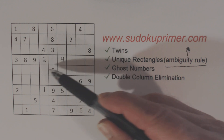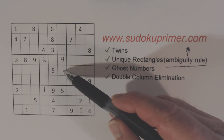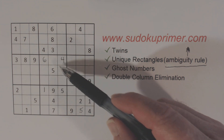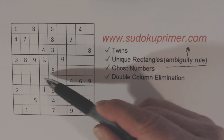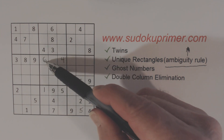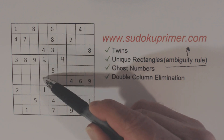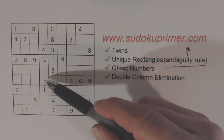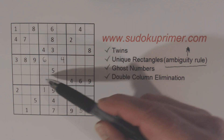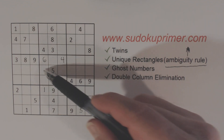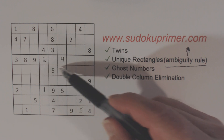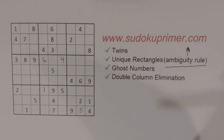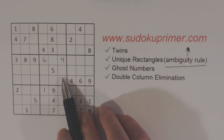Now we can't solve these twins here, but watch what we can do with them. Column five is only missing two numbers: one and two. So we have one-two twins here and three-eight twins here. We have two more cells we haven't numbered yet, and there are only two numbers left — counting through one to nine — so we also have seven-nine twins. We can't solve any of those yet, but even though we can't solve them, we'll be able to use them for some things.